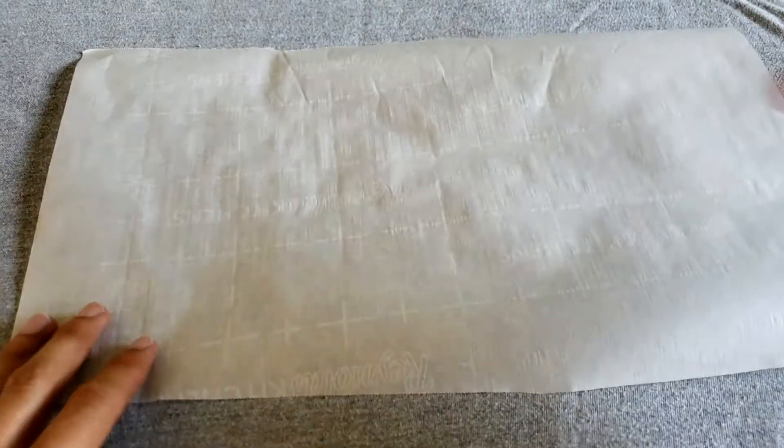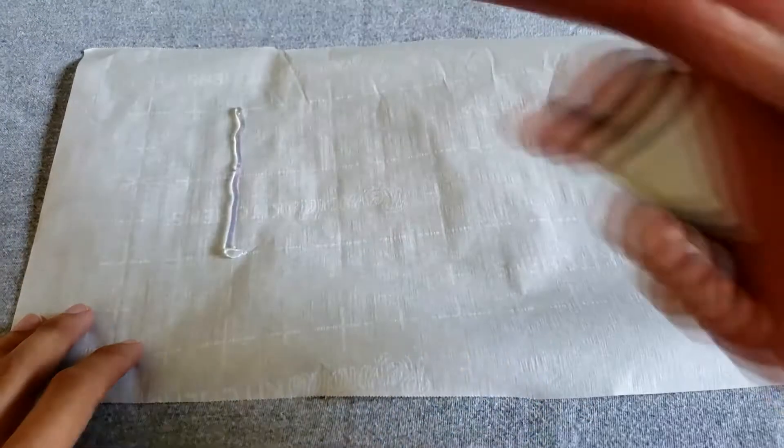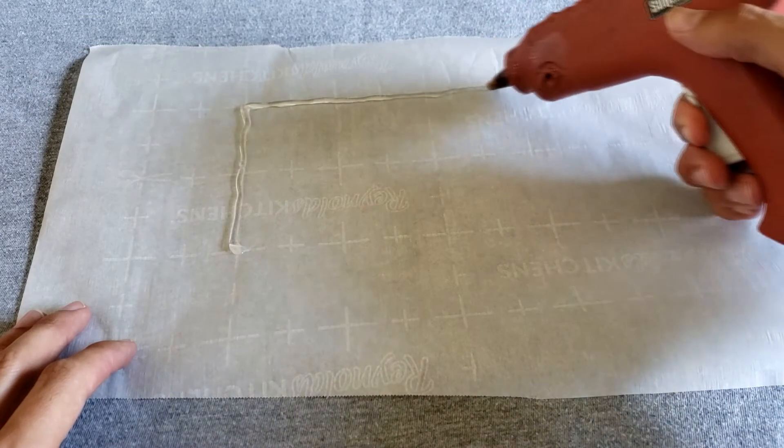So the first thing we're going to do is make a rectangle onto our parchment paper. The rectangle is going to serve as the walls of our candle holder.